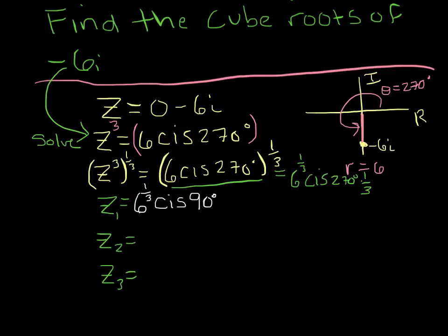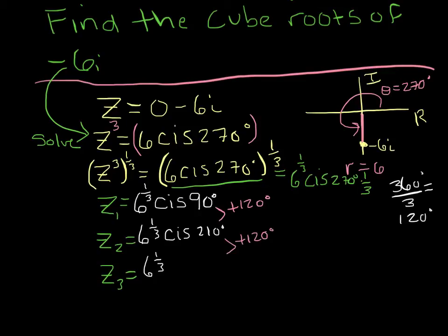There are going to be 3 answers and they're evenly spaced. 360 degrees divided by 3 is equal to 120 degrees. So to get my next angle I add 120. The radii are all going to be cube root of 6. 90 plus 120 is 210, and then I add 120 again and I get cube root of 6 cis 330 degrees. And there are my answers.